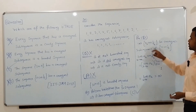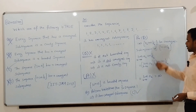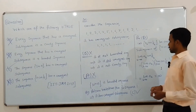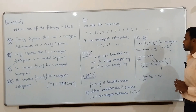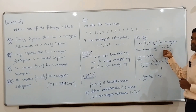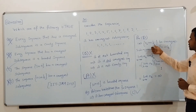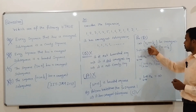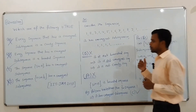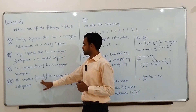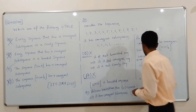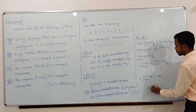Thus, we saw that this subsequence diverges to infinity as k tends to infinity. But this is a contradiction to our assumption that it is a convergent subsequence, because a convergent subsequence must have a finite limit, but it does not. So, our assumption must be wrong, and this sequence has no convergent subsequence. Therefore, option D is wrong.